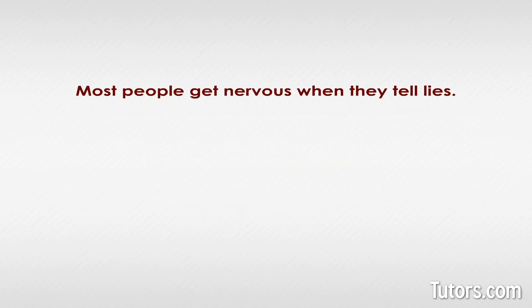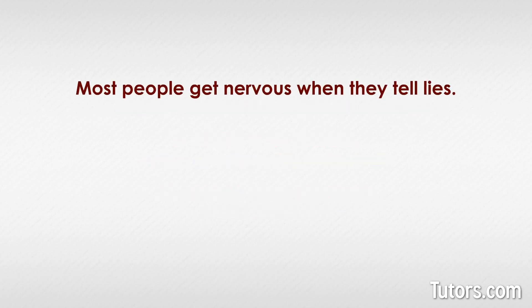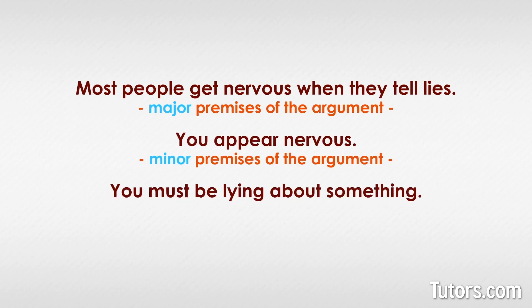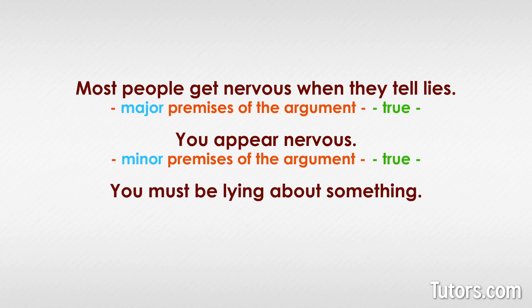A syllogism can also have a faulty conclusion from valid premises. Like in this example: most people get nervous when they tell lies; you appear nervous; you must be lying about something. The major and minor premises are fine, but the conclusion is faulty because the minor premise could be explained by dozens of other things — maybe you have to give a public speech, or maybe you have a job interview tomorrow.